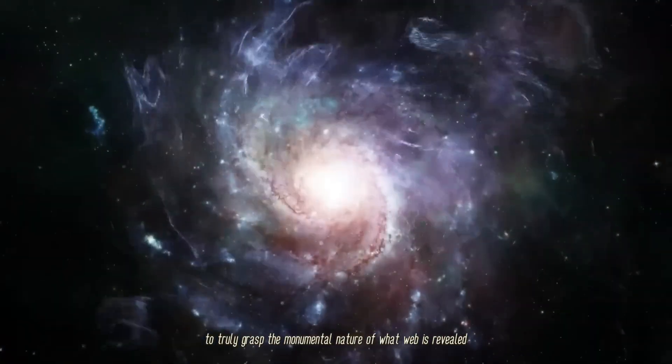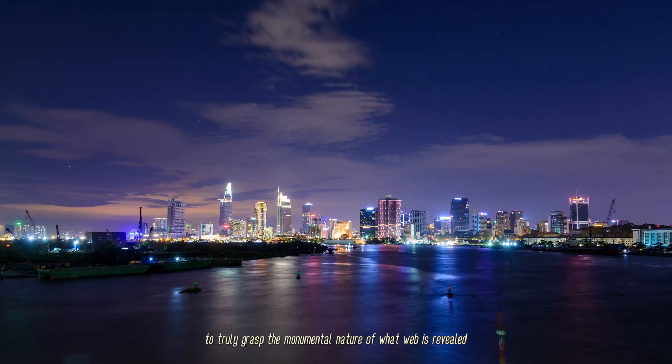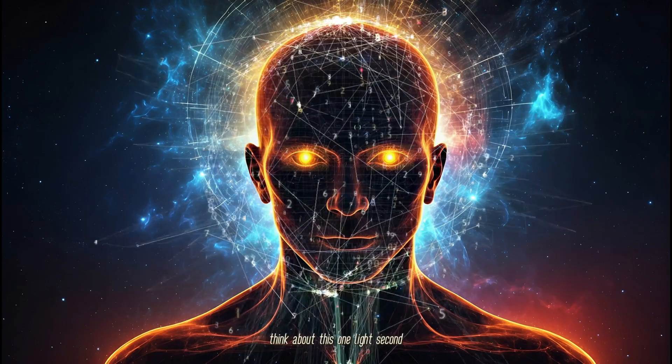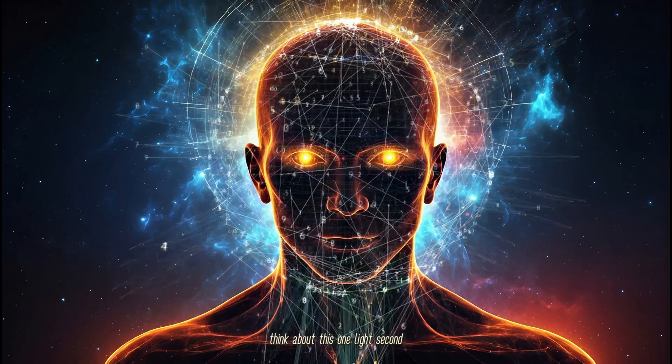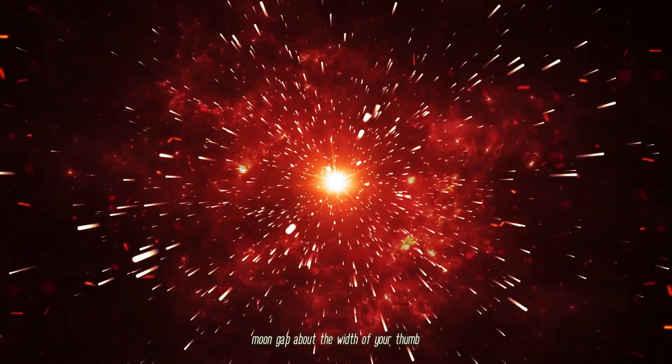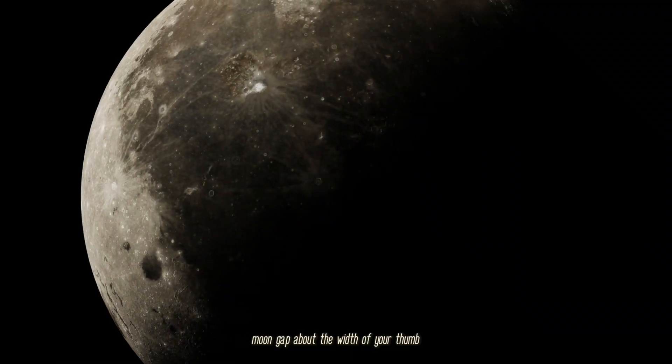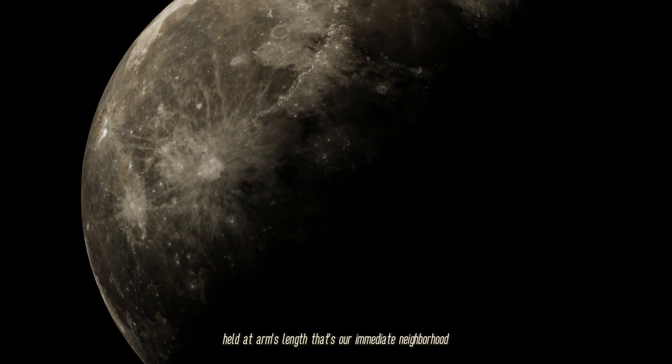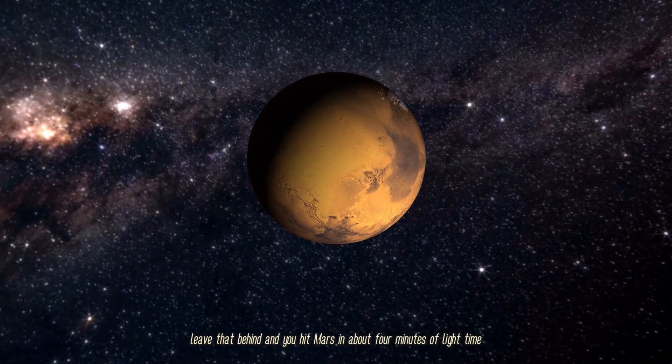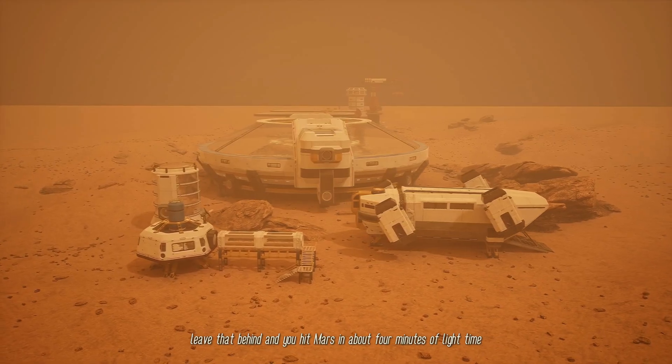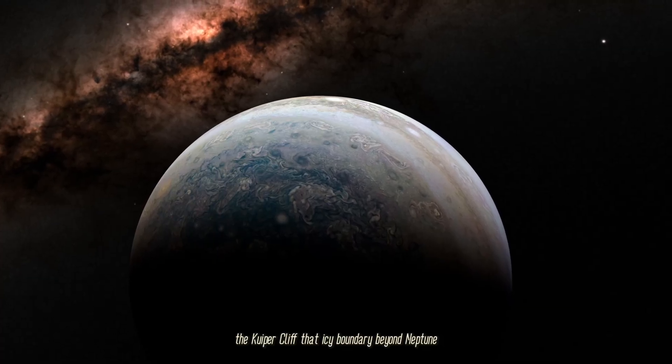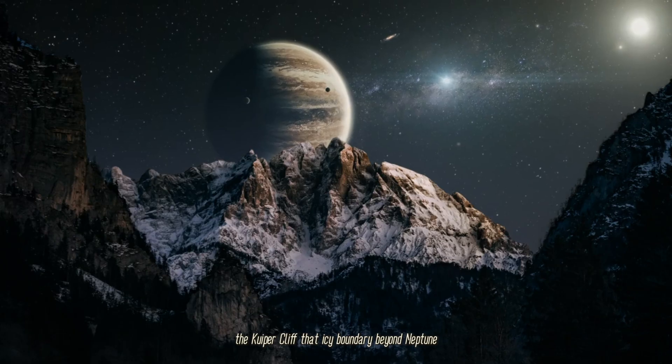To truly grasp the monumental nature of what Webb has revealed, we need to calibrate our brains. Start local: one light second—the time it takes light to span the Earth-Moon gap. Leave that behind and you hit Mars in about four minutes of light time. Jupiter, 40 minutes. The Kuiper Cliff beyond Neptune takes about five hours. We're still just in the cosmic driveway.